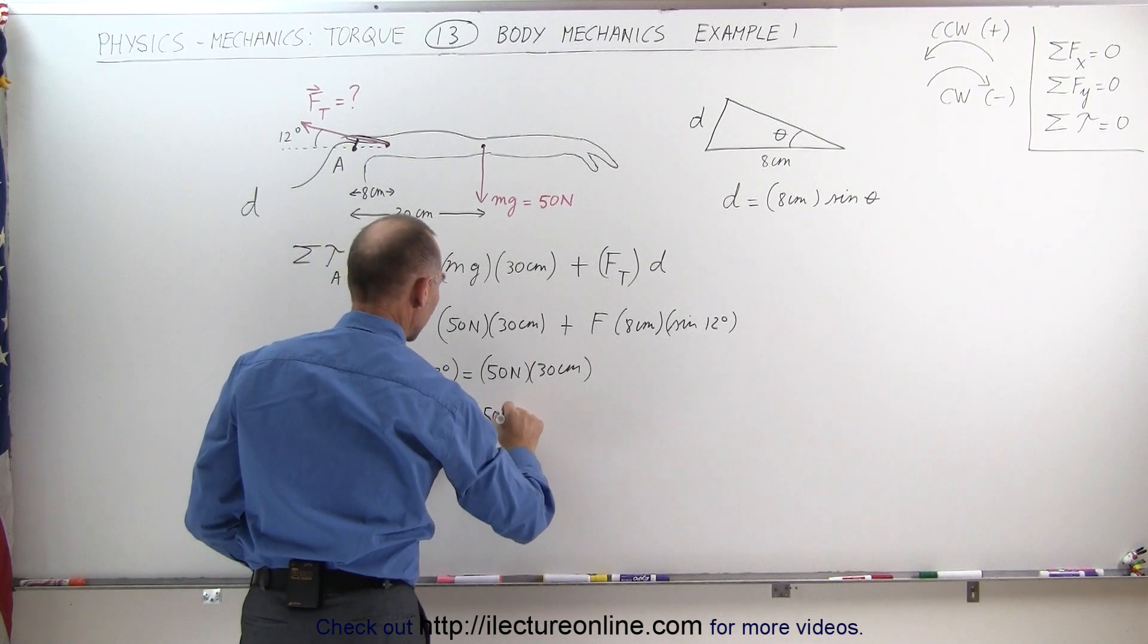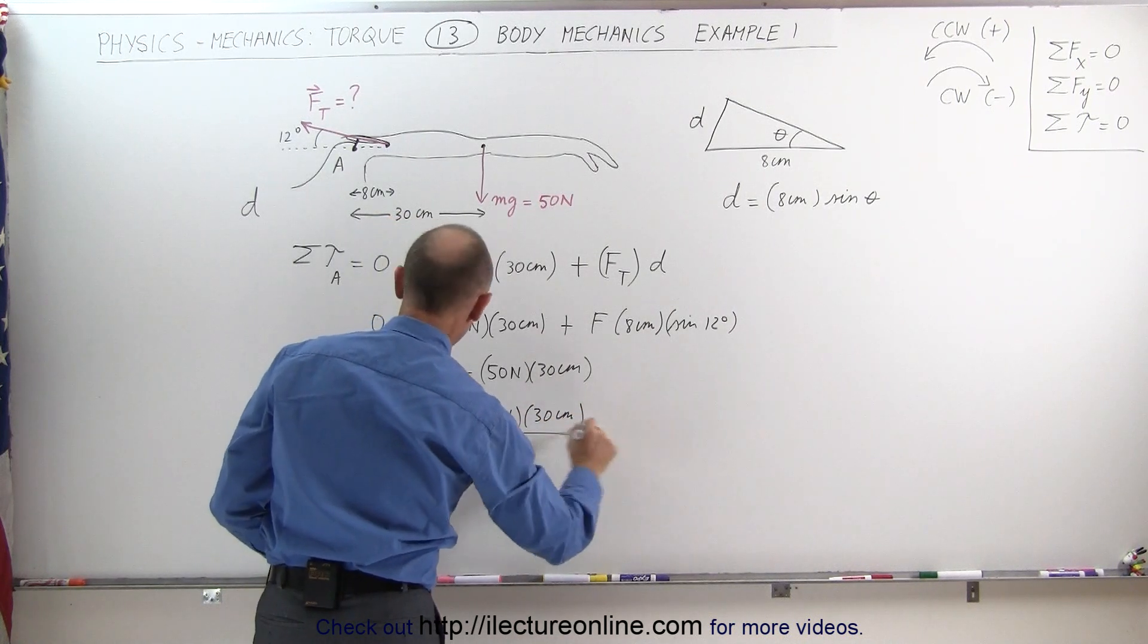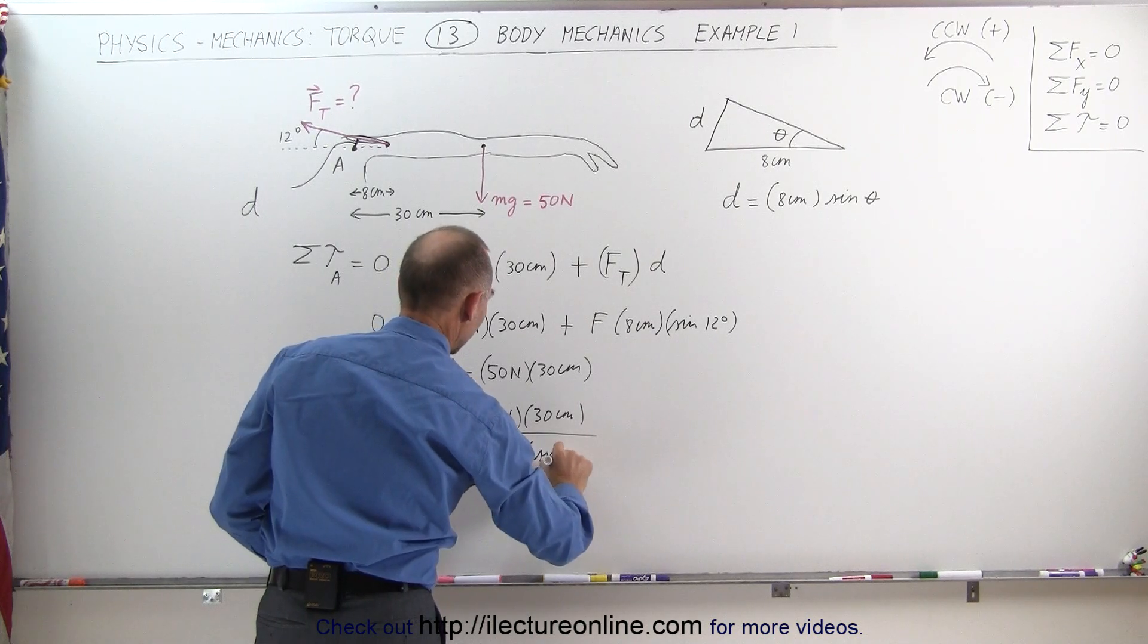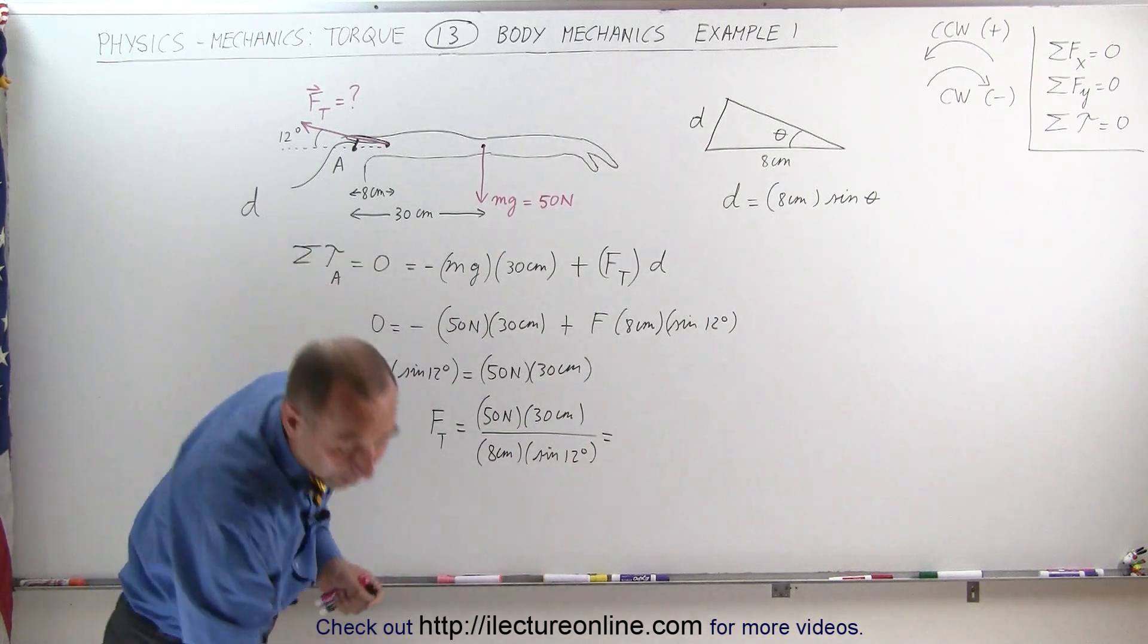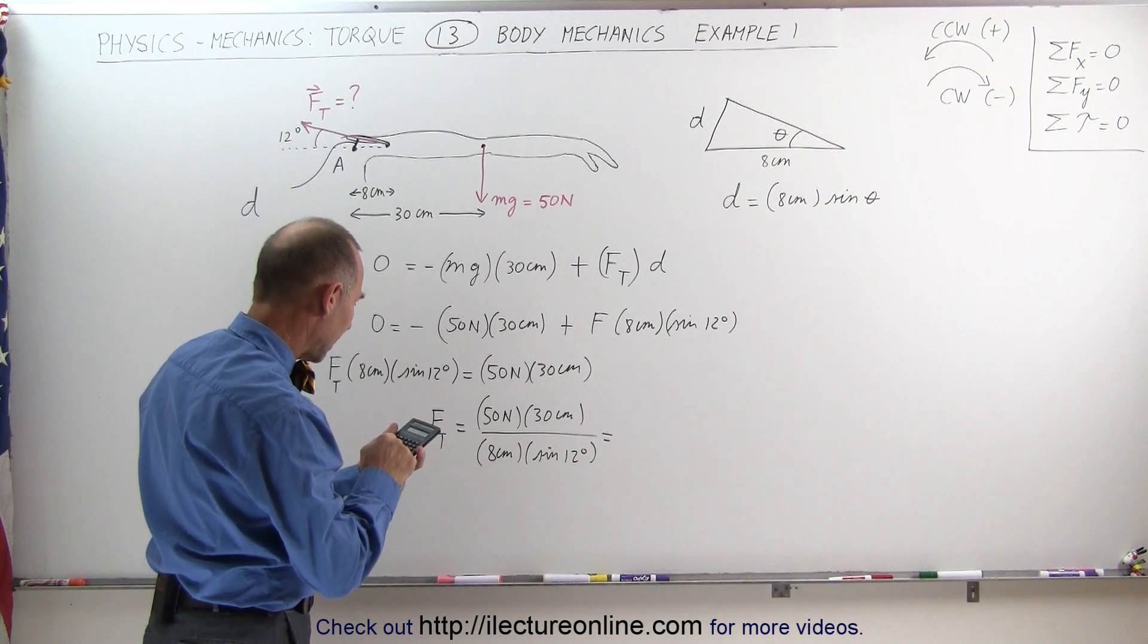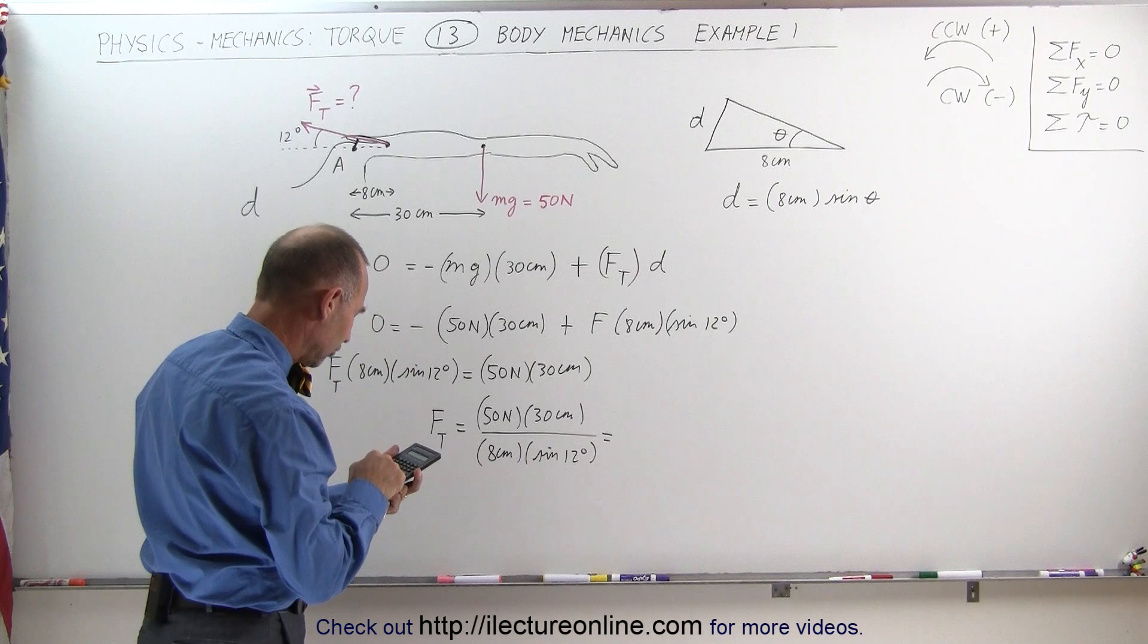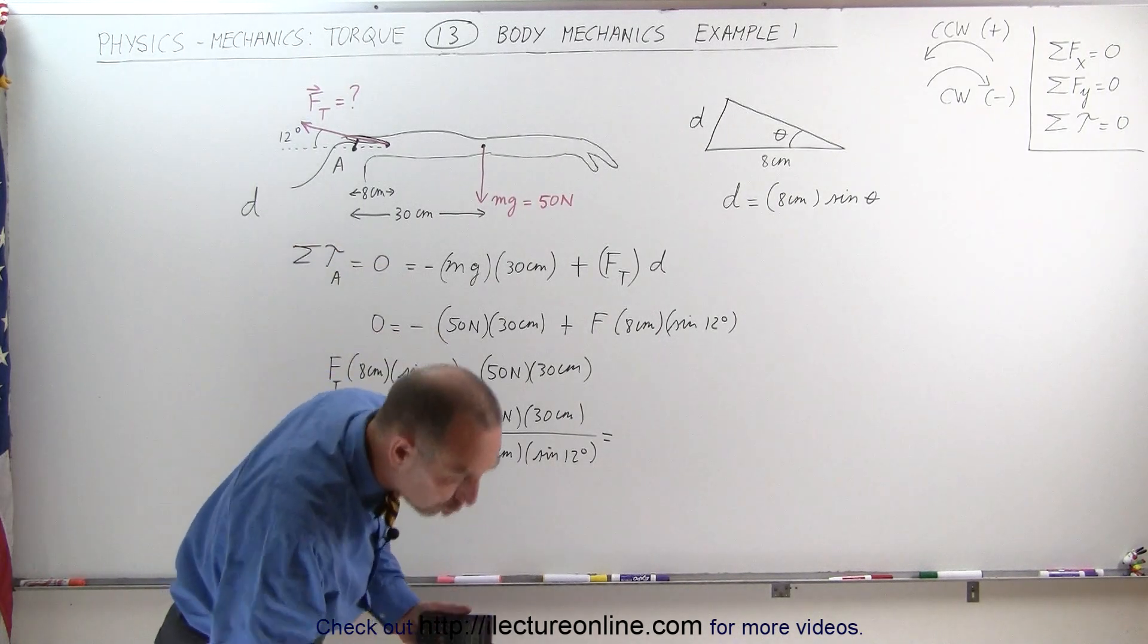Is equal to 50 newtons times 30 centimeters divided by 8 centimeters and divided by the sine of 12 degrees. Let's find out how strong our tricep has to be. We have 50 times 30 divided by 8 and divided by the sine of 12, and we get 902 newtons.